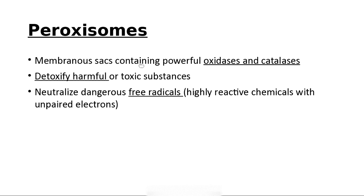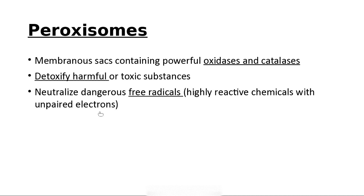Peroxisomes are membranous sacs that have oxidases and catalases, and they detoxify harmful substances such as hydrogen peroxide, which is very toxic to cells. When you pour hydrogen peroxide on a wound and it bubbles, what you're seeing is oxygen bubbles. It probably kills germs, but it is not good for tissue — never pour it in a deep wound because it will cause more damage than it will help. Peroxisomes also get rid of free radicals, which are chemicals that temporarily have unpaired electrons.